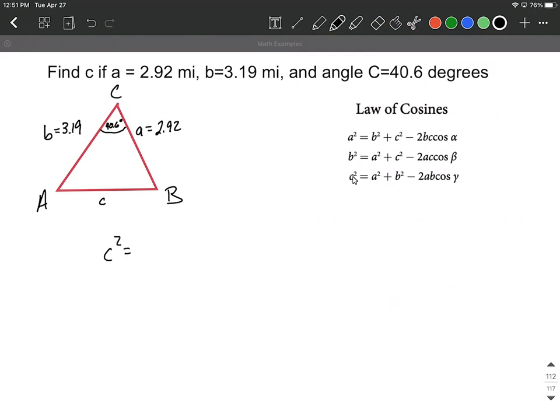In setting this up I'm going to say c squared is equal to a, 2.92 squared, plus b, 3.19 squared, minus 2 times a, 2.92, times b, 3.19, times cosine of the 40.6 degrees.